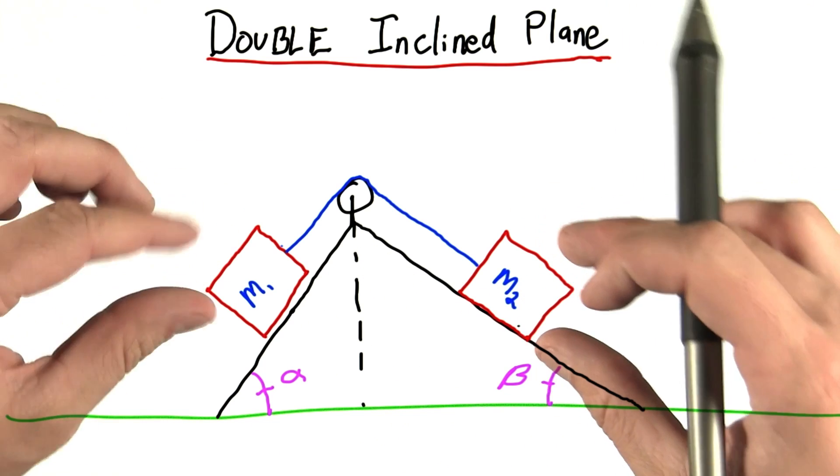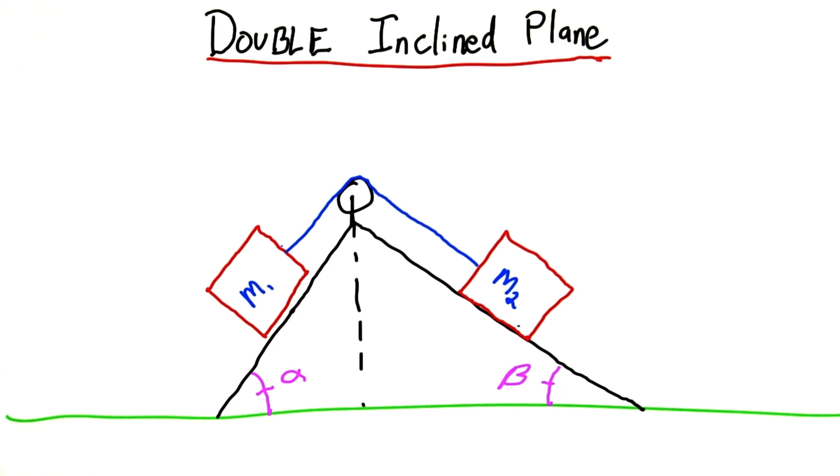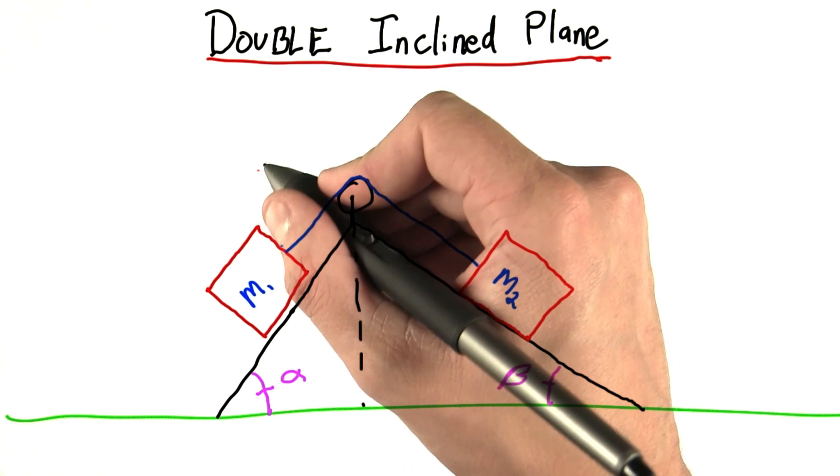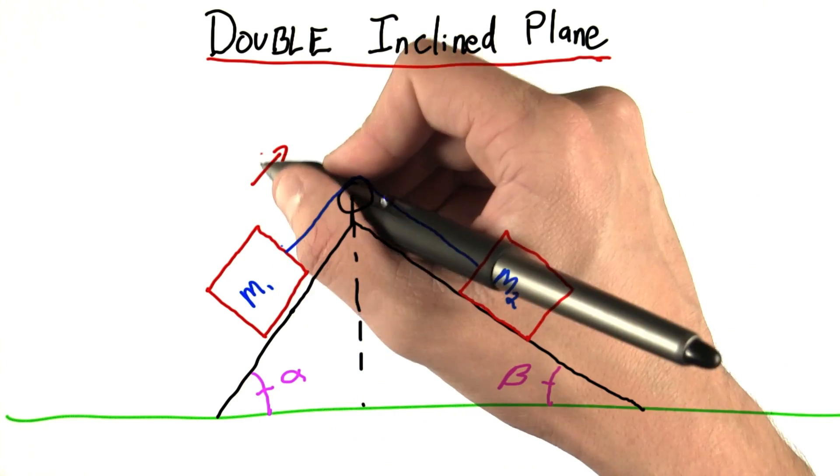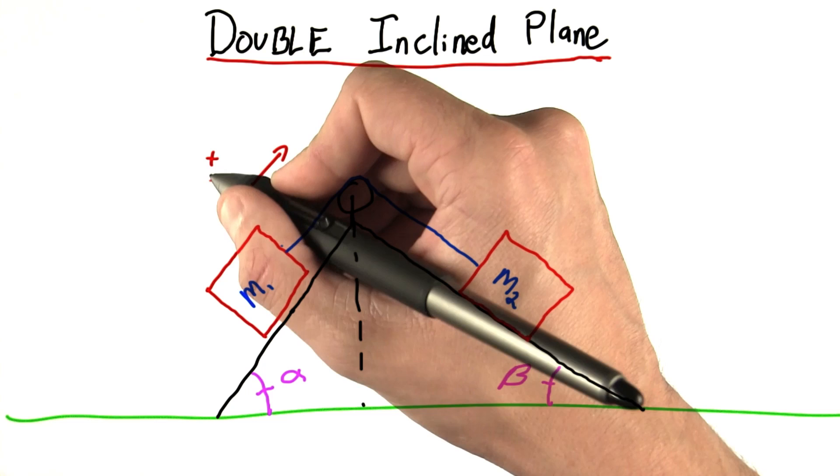I want to know, if I set the system up and then release it, how is it going to accelerate? Just to be consistent, let's call a clockwise direction. So if this one's moving up and this one's moving down the plane, we'll call that a positive acceleration, plus a.